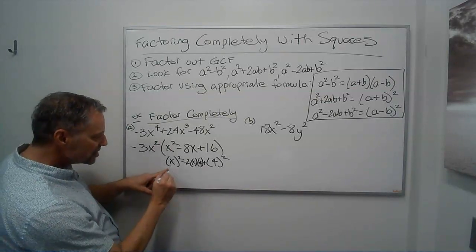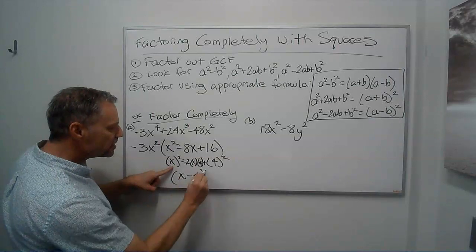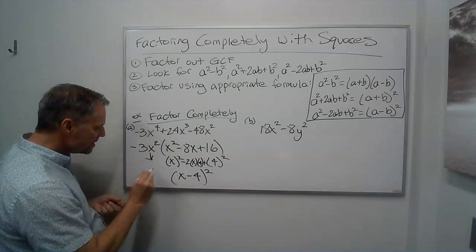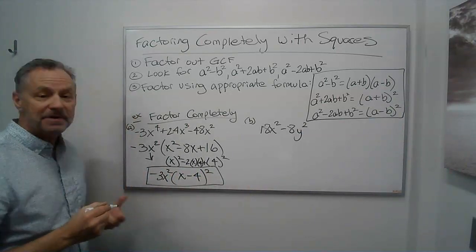So this is just going to be the first term, x, minus the last term, 4, square the whole thing. And then this is just going to come straight down. I get negative 3x squared times that. And I'm done.